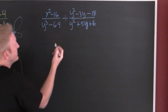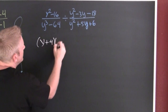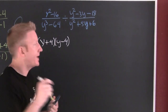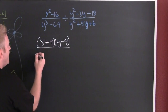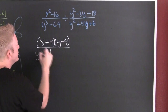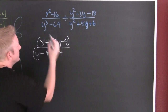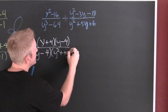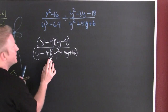Up here in the numerator, I see that's the difference of squares — this is y plus 4, y minus 4. And that denominator — that's the difference of cubes. So then: y minus 4, same sign, opposite — 4 times y is 4y, always positive, plus 16. That's how I factor that denominator.